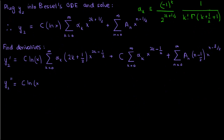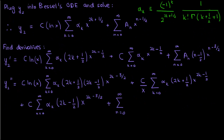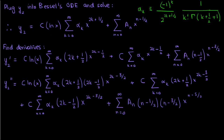The second derivative can be found using a similar process involving the product rule and simple differentiation. We simplify it by putting the 1 over x back into the summation. We can simplify further: the 1/2 term in the second summation cancels the negative 1/2 term in the third summation. The 2k terms add together to give 4k, and 2k plus 1/2 times 2k minus 1/2 becomes 4k squared minus 1 over 4.